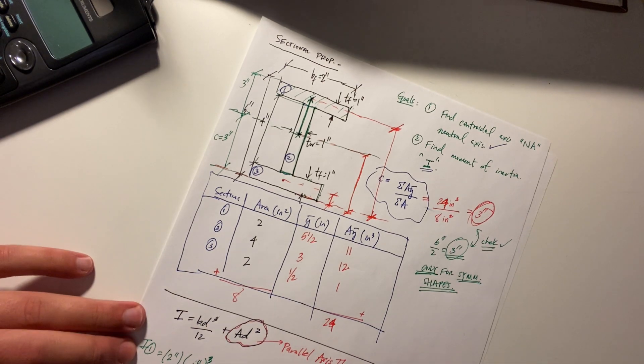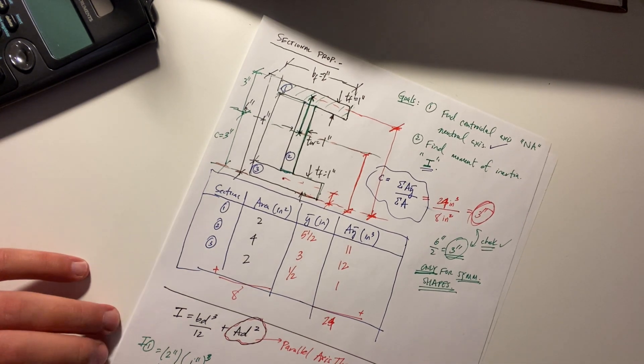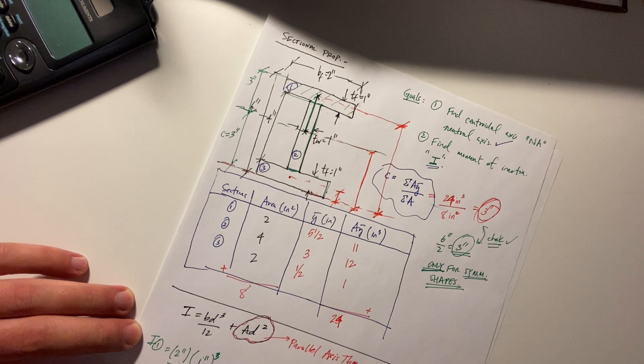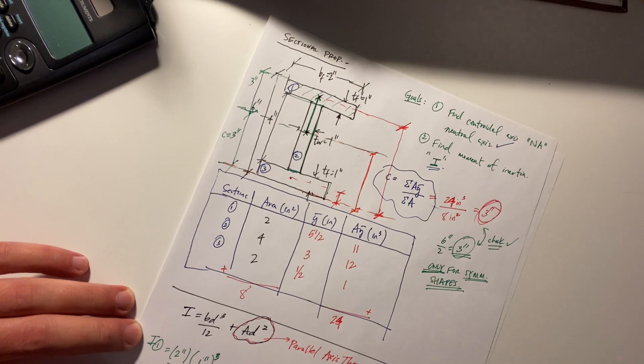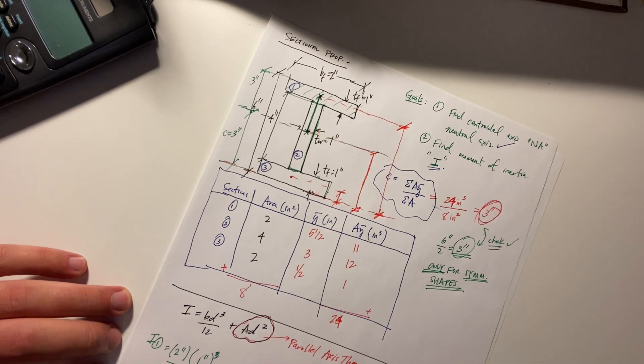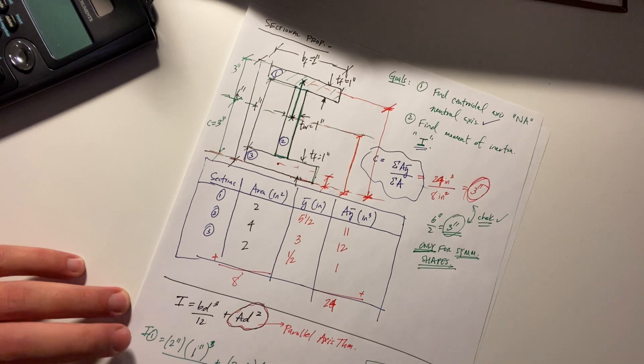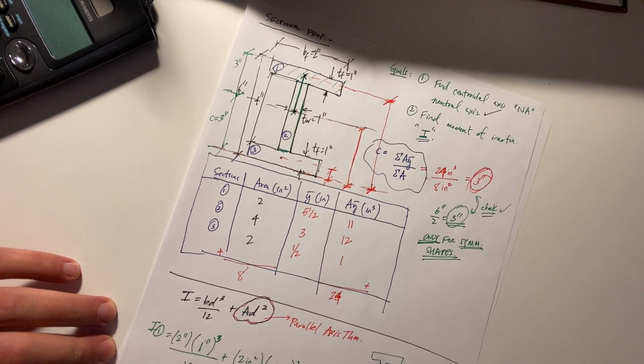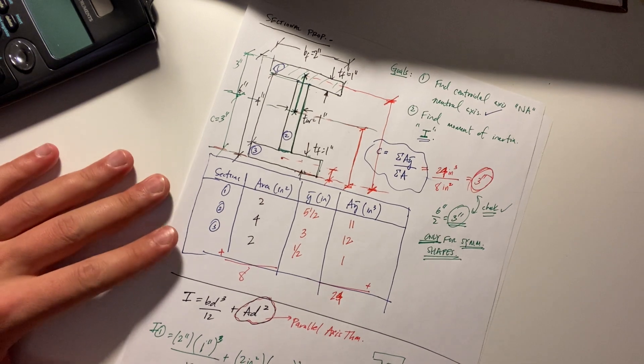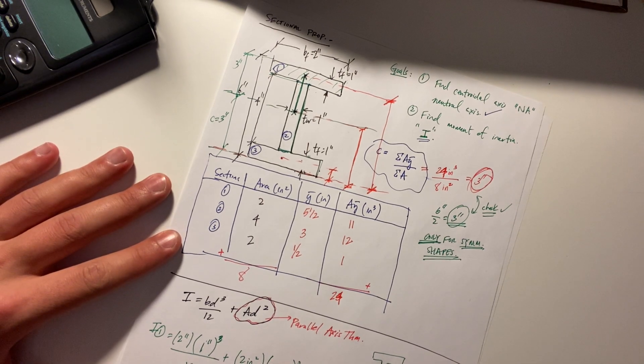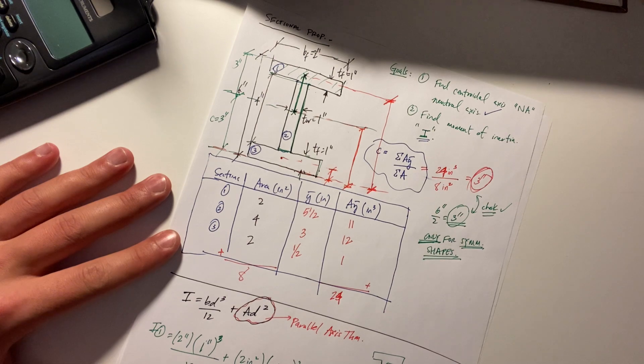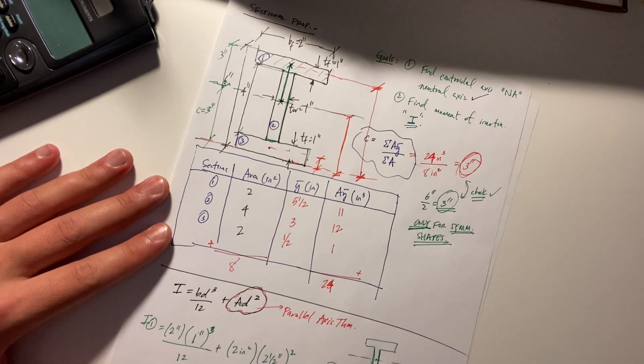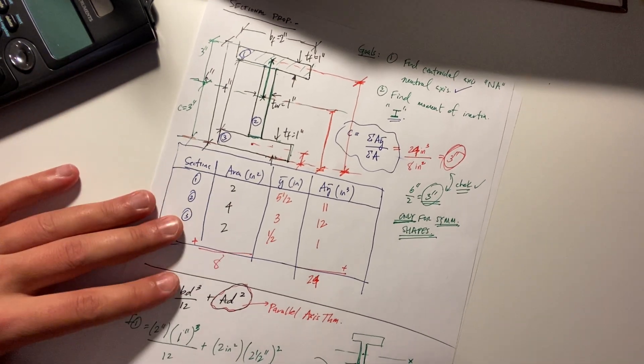So once you do the math for all this you just add them together summations of i which equals i1 plus i2 plus i3 everybody here knows how to punch things into the calculator i will not do that because it's a waste of my time and pointless just figure out this is multiply by two and add it to this got your moment of inertia what is moment of inertia resistance to bending